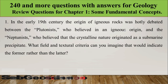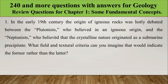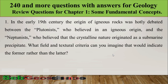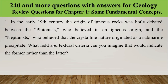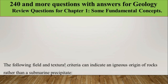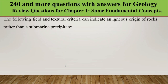Question one: In the early 19th century, the origin of igneous rocks was hotly debated between the Plutonists, who believed in an igneous origin, and the Neptunists, who believed that crystalline rocks originated as marine precipitates. What field and textural criteria would indicate the former rather than the latter? Let us answer step by step.